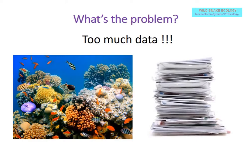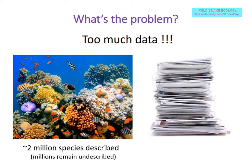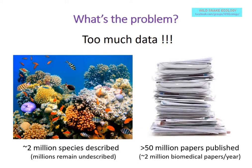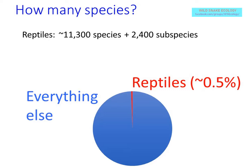We also have a general problem of too much data. We know we have at least two million species described and many millions not yet described. There are over 50 million scientific papers published in total, with some estimates of two million biomedical papers published per year. We have 11,000 reptile species and 2,500 subspecies, which make up only about half a percent of all known living species.